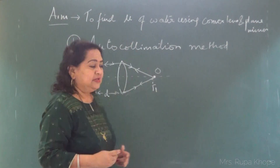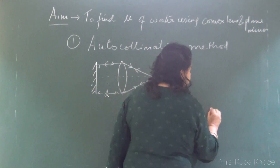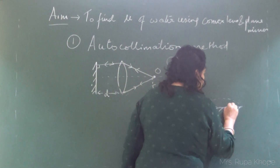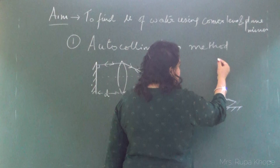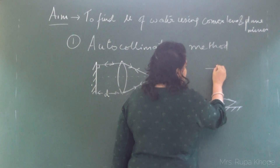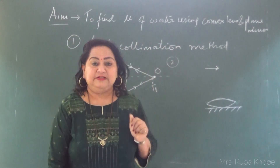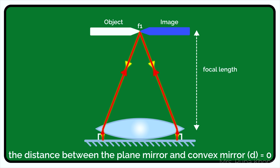Now let's learn how to find the focal length of the convex lens — concept number two. I keep the plane mirror on the optical bench and the convex lens on top of it. With an object pin on a stand, rays of light must fall normal to the plane mirror. This means the object should be placed at the focus. By removing the parallax, we get the image at that point, and this distance is the focal length, which I call f1.